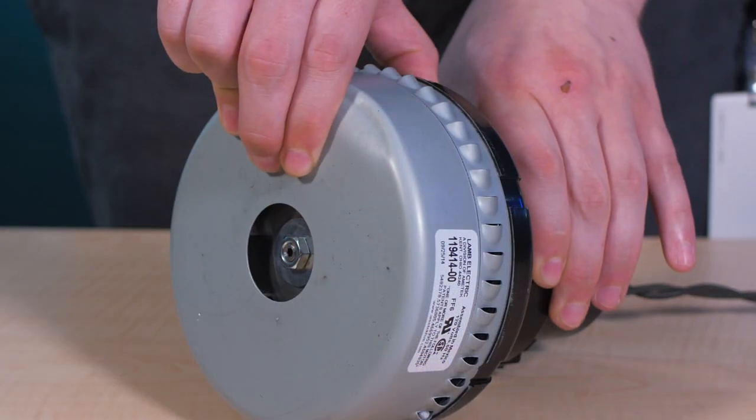Finally, series universal motors are also known for a high starting torque, which explains the fast spin up we noticed when we powered up this motor.